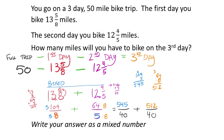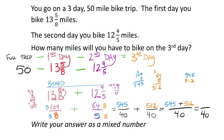Now that our denominators match at 40, we add the numerators: 545 plus 512. Five plus two is seven, four plus one is five, five plus five is ten — giving 1,057. So we have 1,057 fortieths total miles biked in the first two days.